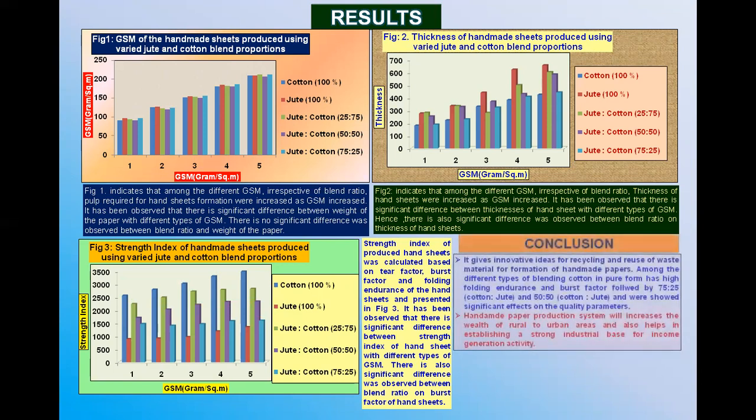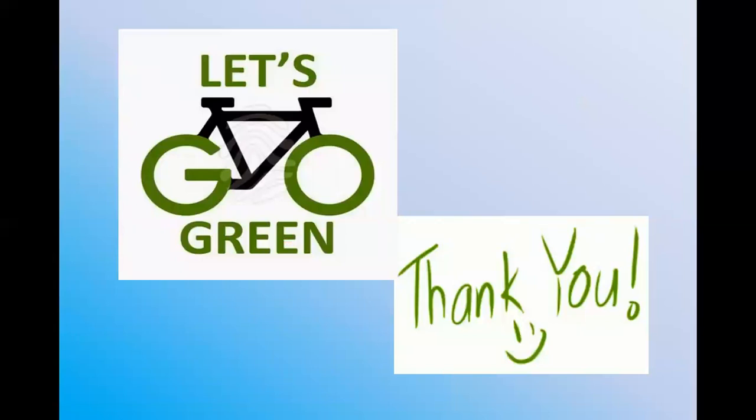Now coming to the conclusion. It gives innovative ideas for recycling and reuse of waste material for production of handmade papers. Among the different types of blending, cotton in pure form has high folding endurance and burst factor, followed by 75:25 percent, that is 75% cotton and 25% jute, and also 50-50% cotton and jute ratio, which showed significant effects on quality parameters. Handmade paper production system increases the wealth from rural to urban areas and helps in establishing a strong industrial base for income generation activity. Along with this, it reduces the deforestation activity. Thank you. Let's go green.